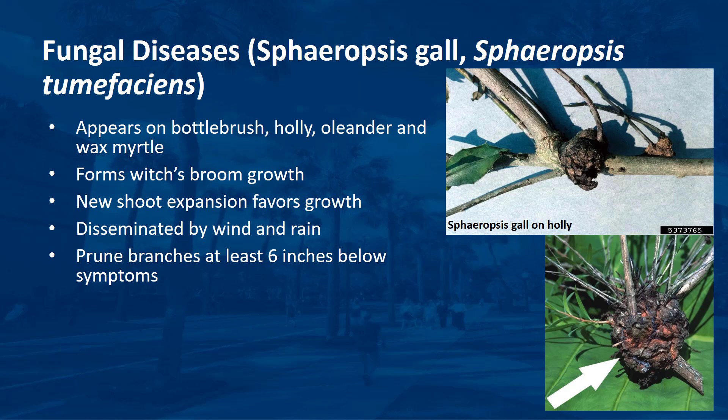Now let's mention some of the common fungal diseases. The Sphaeropsis gall fungus is a serious disease throughout Florida, appearing on bottle brush, holly, oleander, and wax myrtle. The fungus causes swollen, woody galls in the branches of holly and bottle brush, and also forms witch's broom growth on wax myrtle, oleander, holly, and other woody plants. Factors favoring the disease are periods of new shoot expansion. The disease is disseminated by wind and rain. During dry conditions, prune branches at least 6 inches below where symptoms are seen.